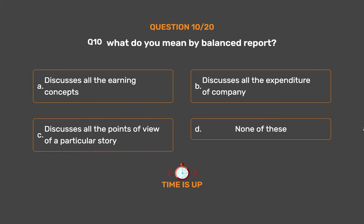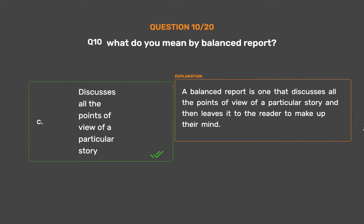The correct answer is Option C: Discusses all the points of view of a particular story. A balanced report is one that discusses all the points of view of a particular story and then leaves it to the reader to make up their mind.